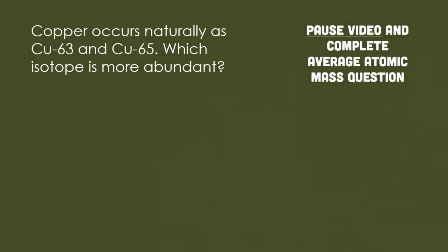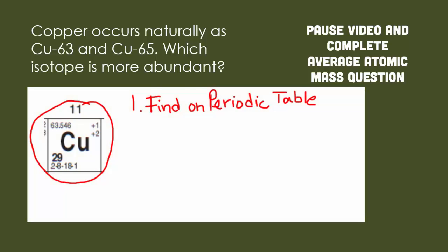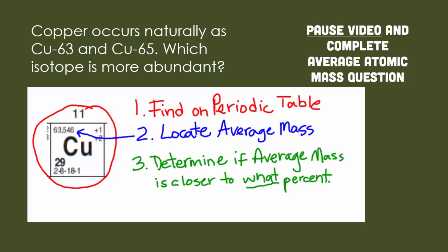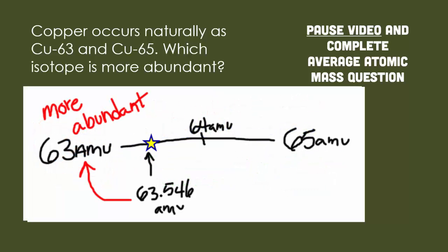Now let's try another one. Copper occurs naturally as either the isotope copper-63 or copper-65. Which of these two isotopes is going to be more abundant? Look at your periodic table — that's the only hint. The first thing you have to do is find copper on the periodic table, and you'll notice its average mass is 63.546. You then have to determine if the average mass is closer to 63 or 65. On a number scale, with 63 on the left and 65 on the right, 63.546 is way more closer to 63 than it is to 65.